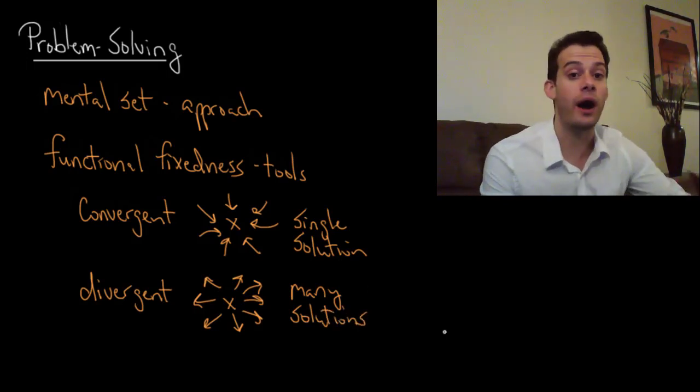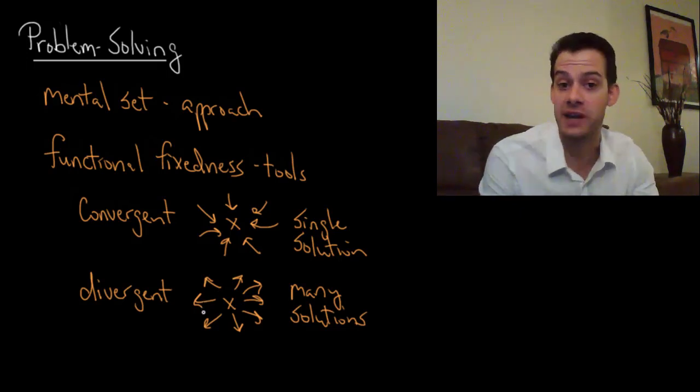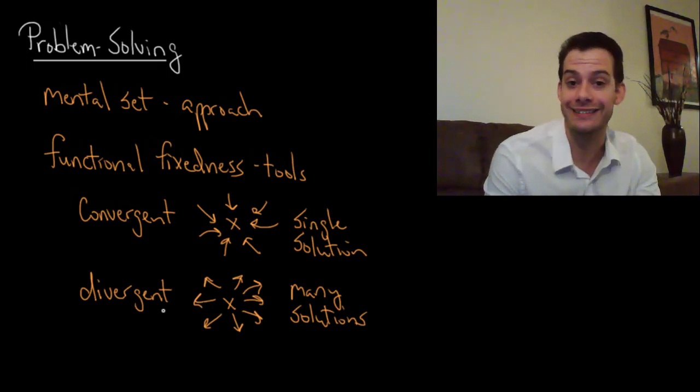We have to come up with new unrelated ideas for maybe how we could use a particular tool. That would be an example of divergent thinking.